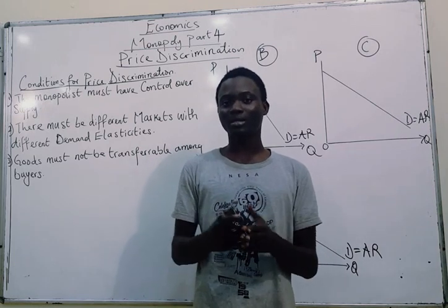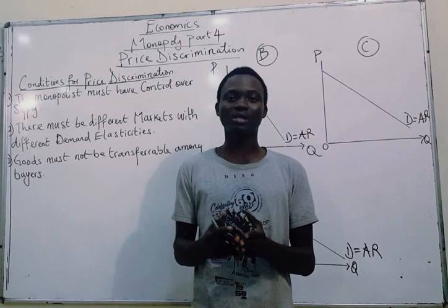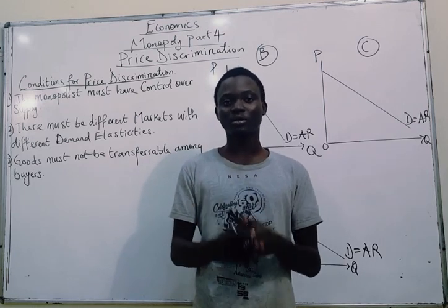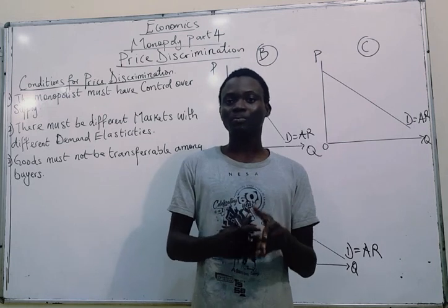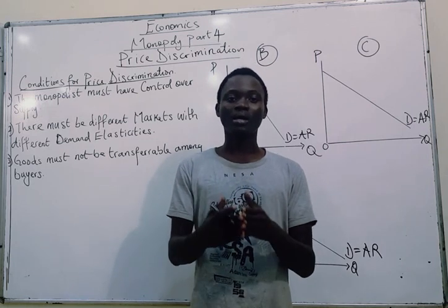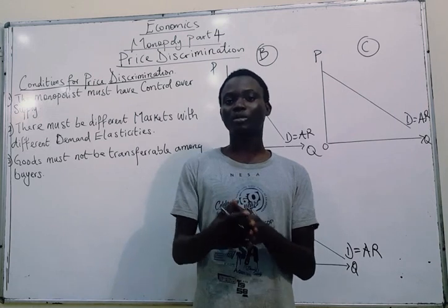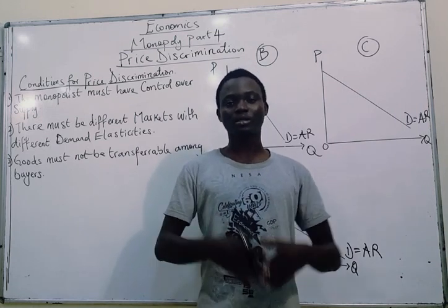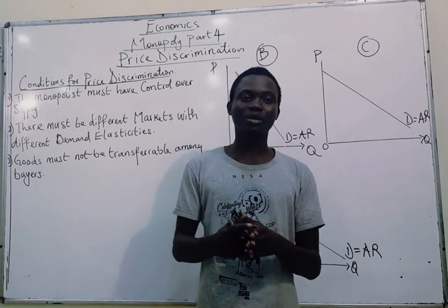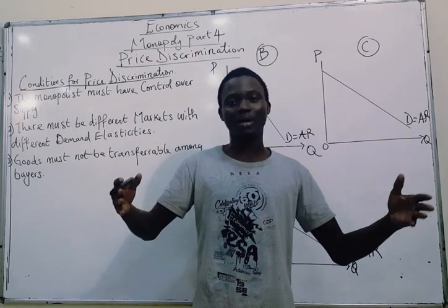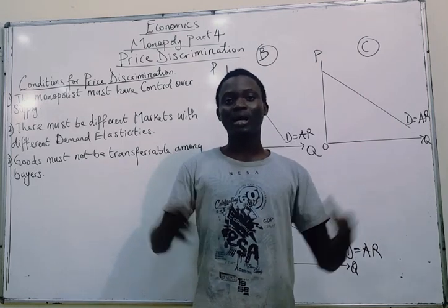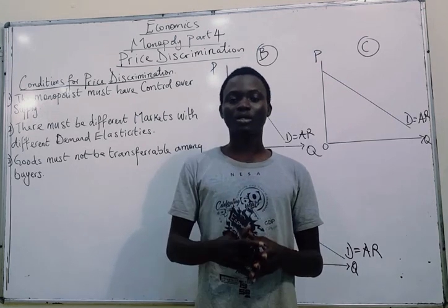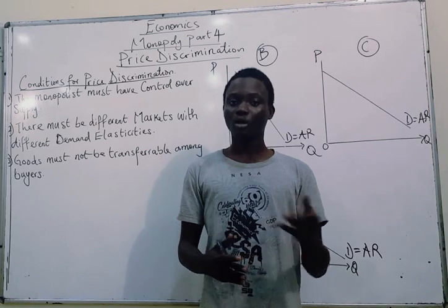Those who have the inelastic demand curve can be charged higher prices, as we know from the lessons on demand elasticities. And the market with elastic demand could be charged the relatively lower price. So a monopolist could divide the market into several parts, depending on how wide the market is and how varied the willingness to pay of the consumers are.